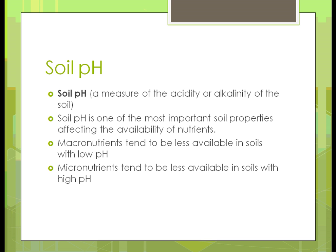Soil pH is very important when looking at how plants grow. It's a measure of how acidic, neutral, or alkaline the soil is. It matters because plants prefer a certain range — most plants like somewhere between 5.5 and 7 in the Midwest and much of the world. Some plants like acidic soils, some like neutral soils, and you'll learn those preferences as you learn the different plants you'll be growing.